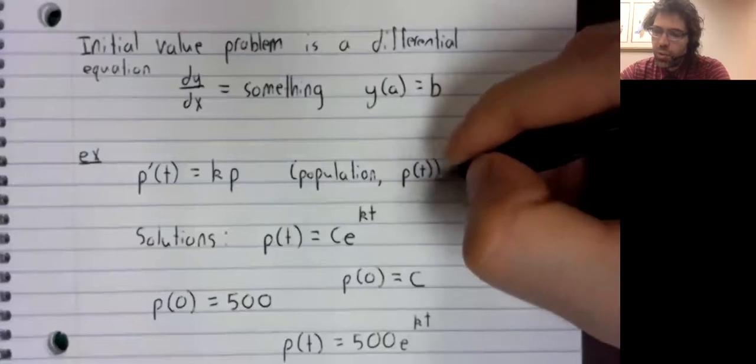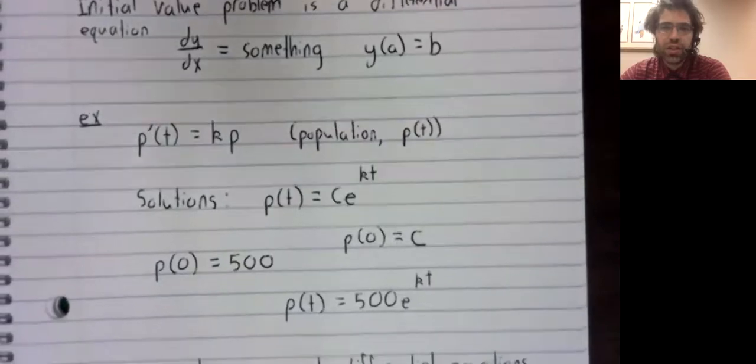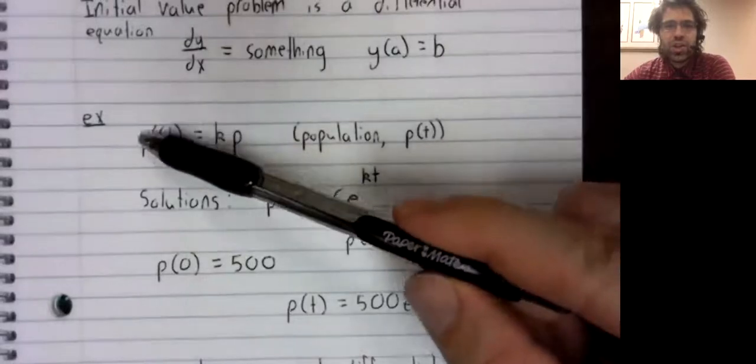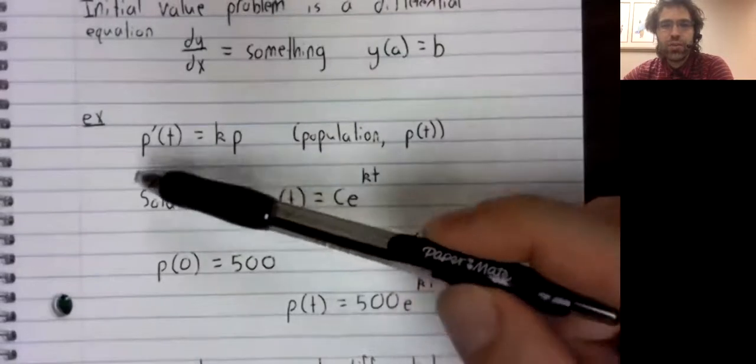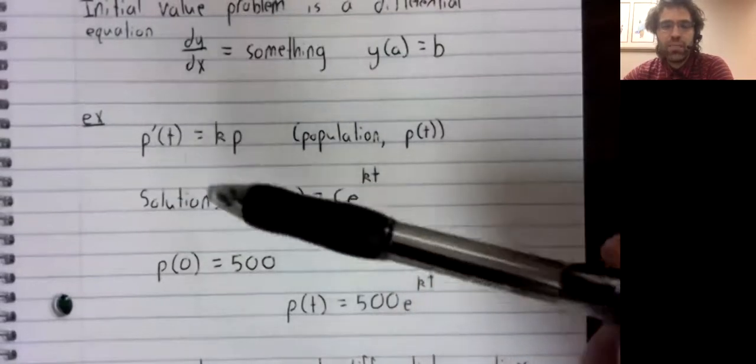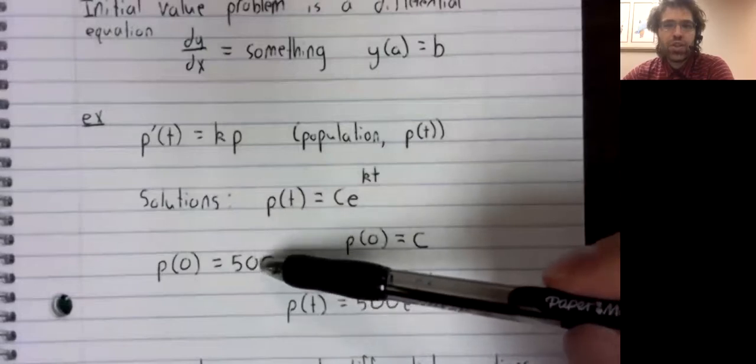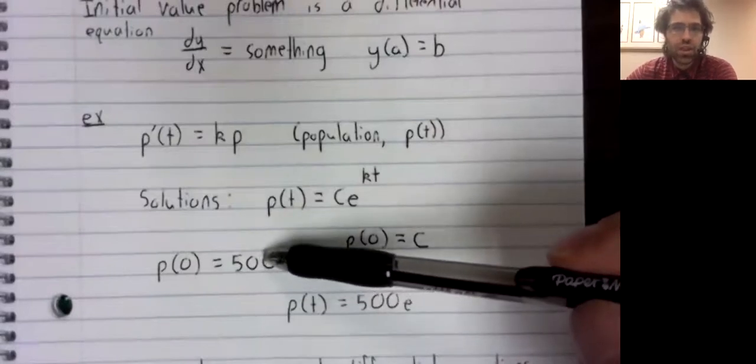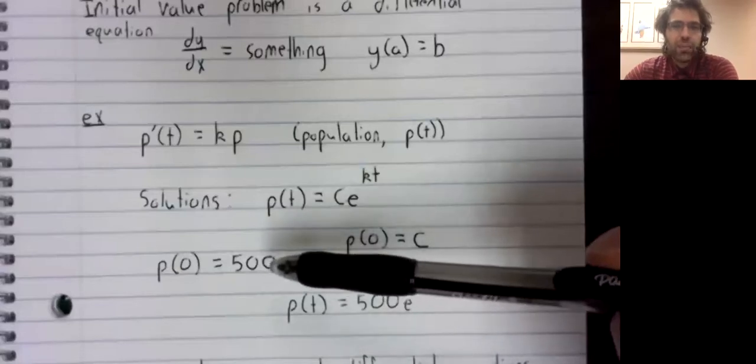Let's call it a population function. So we're in this situation where our population function satisfies this differential equation. And we know what our population function is doing now.